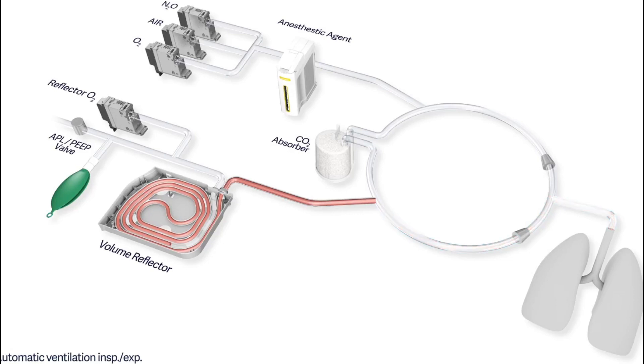A circle system can be semi-closed or closed. In a semi-closed circle, the APL valve is opened and allows excess gas to be removed from the system and reduce the risk of barotrauma.